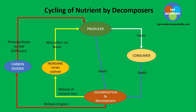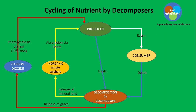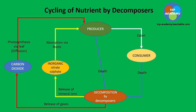This cycle shows the flow of nutrients within the ecosystem and the role that decomposers play — our fungi and bacteria. They are the organisms responsible for the decomposition and the cycling of nutrients in the environment, releasing trapped nutrients from the organic remains of organisms.